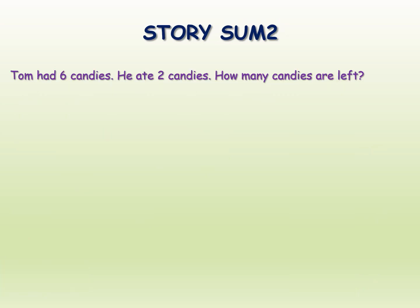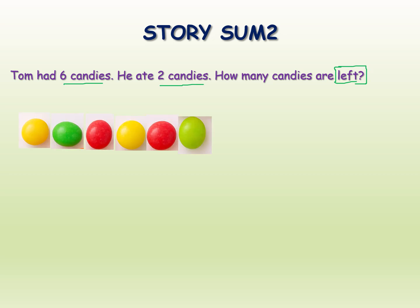Next, here is the second story sum. Tom had six candies and he ate two candies. How many candies are left? Here also we are using the keyword 'left', which means we should do subtraction. First we take six candies, then the minus symbol, and how many he ate — two candies.